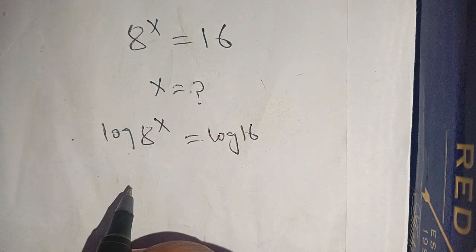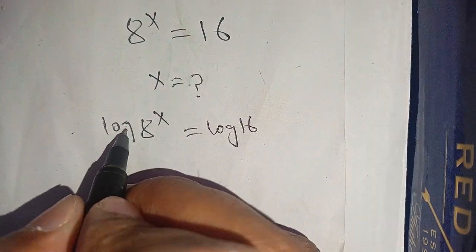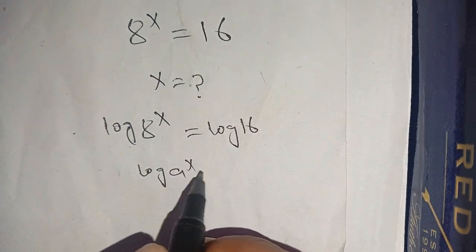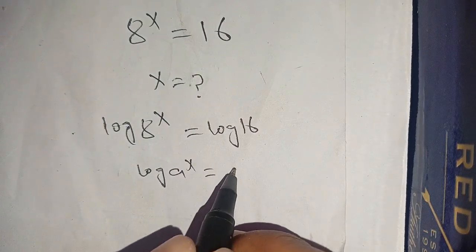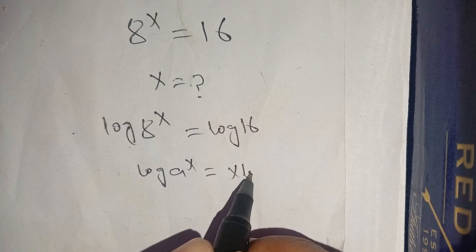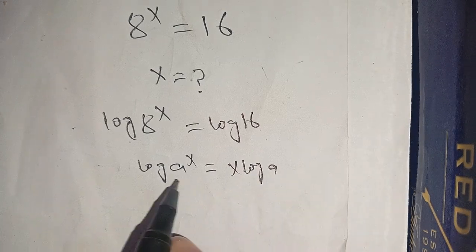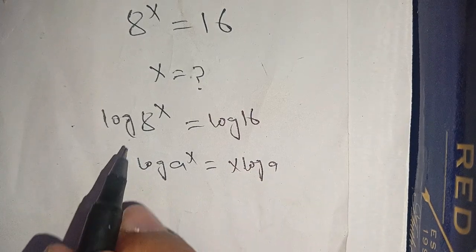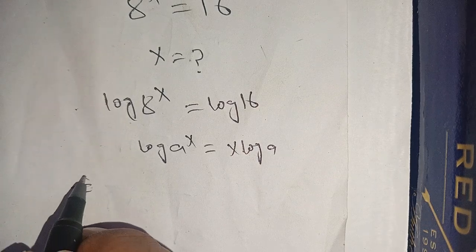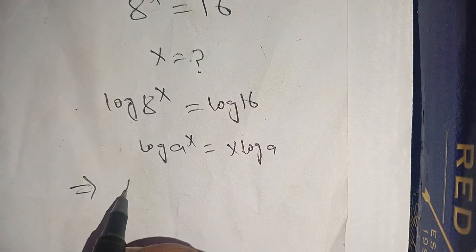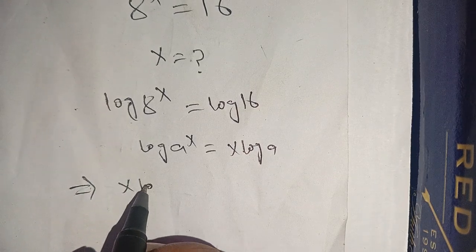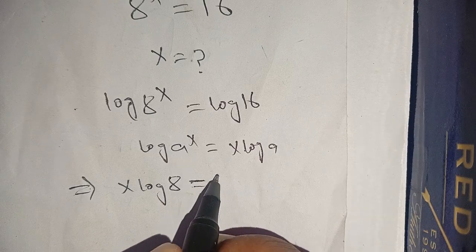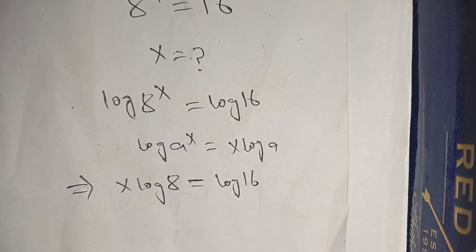Now in the next step, we know that log of a power x is equal to x log of a. Using this identity on the left hand side, we get x log of 8 is equal to log of 16.